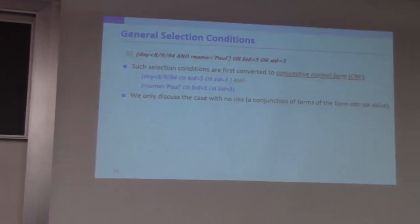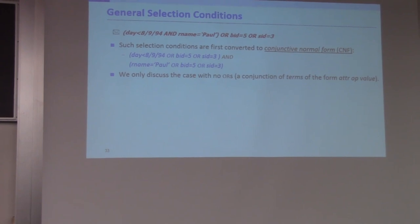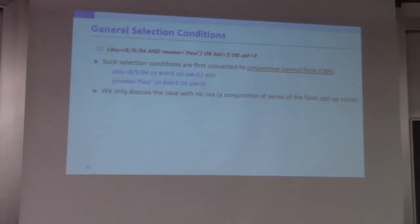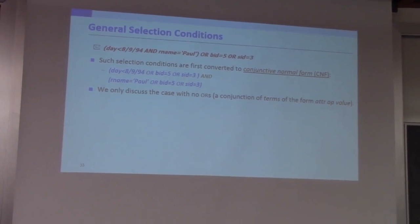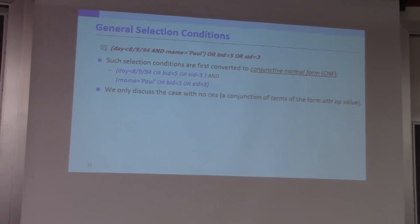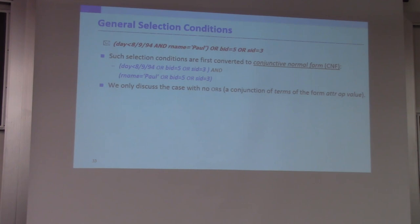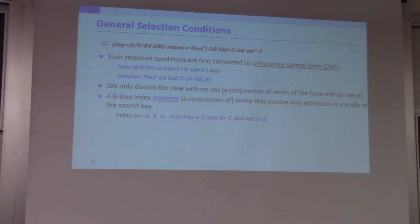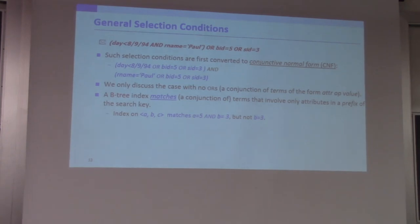Why do we need to convert an incoming query — an incoming logical expression — into a conjunctive normal form? The reason is to do index selection. To facilitate that discussion, we will focus on a simple case where each term is a single atomic logical expression without any OR terms — meaning less than, greater than, or equal to. Given that observation, we are going to define this concept called matching.